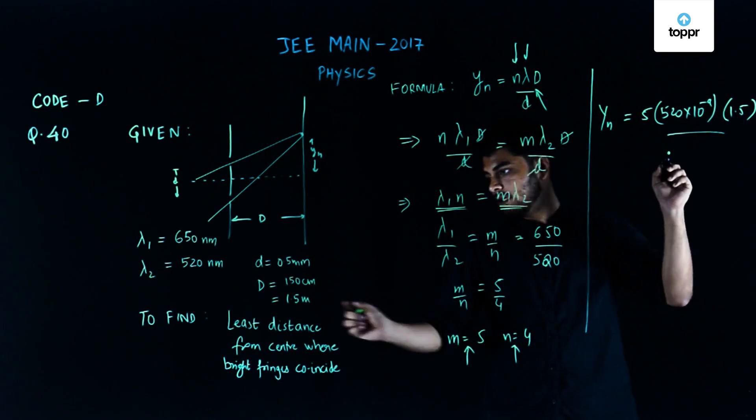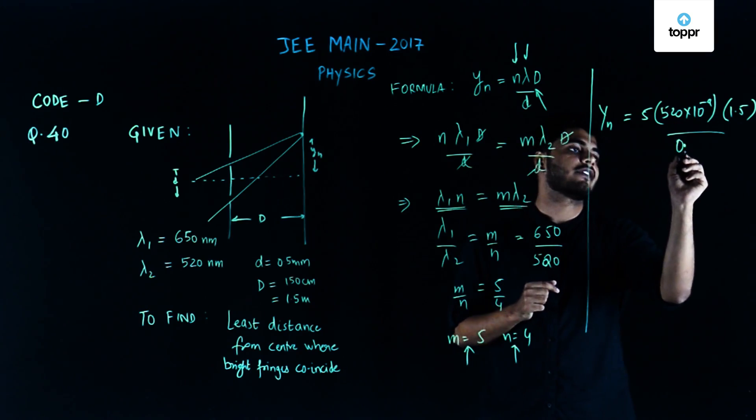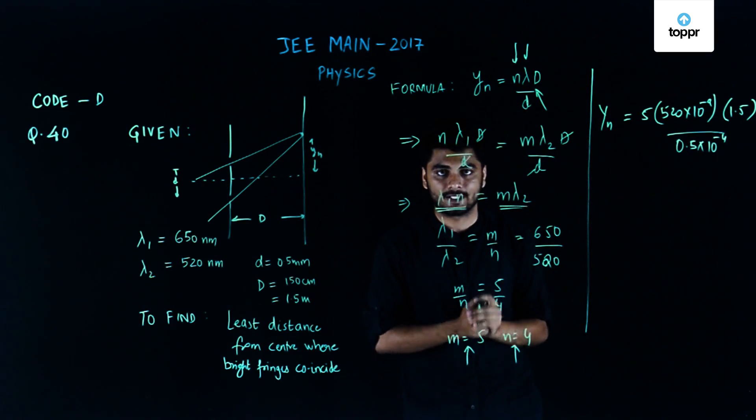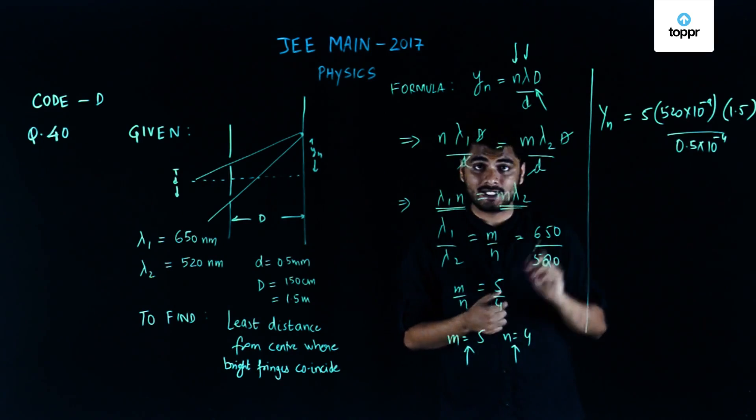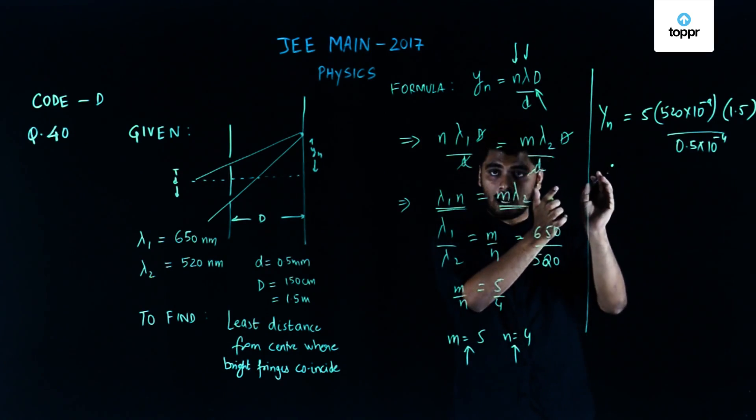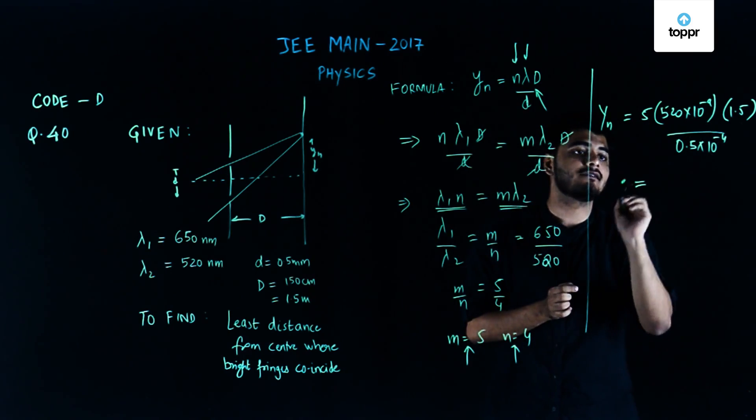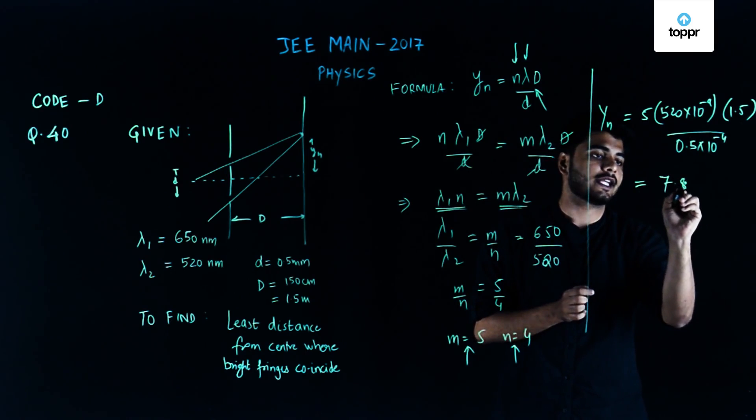...0.5 mm or 0.5 times 10 to the power minus 3 meters to convert this into meters. We have to take care of the units as well. In order to solve this we just need to solve this entire equation and the final value comes out to be 7.8 mm.